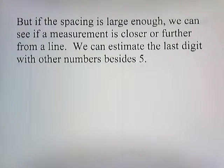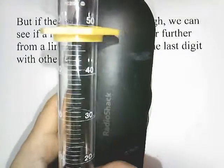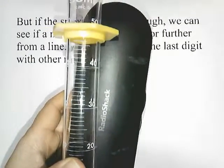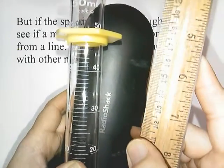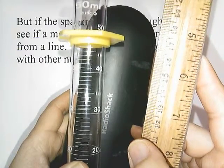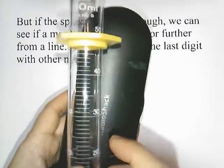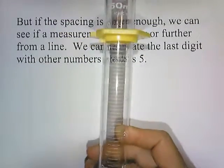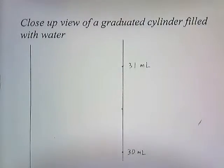If a measurement falls between two lines that are really close together, the best estimate is that it's halfway between, and the estimated digit is five since the measurement is 50% in between the lines. But if the spacing is large enough, we can see if a measurement is closer to or further from a line, and we can estimate the last digit with other numbers besides five. So here is a graduated cylinder, and you can see the lines here are spaced further apart. Here the lines are further apart, and we can tell if it's closer to one line or another.